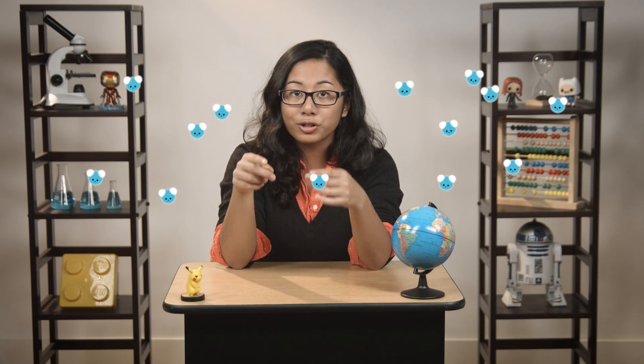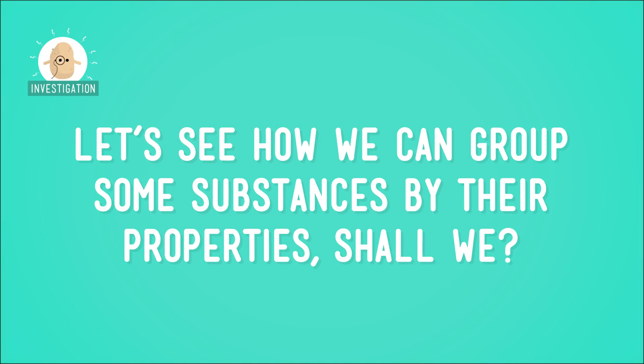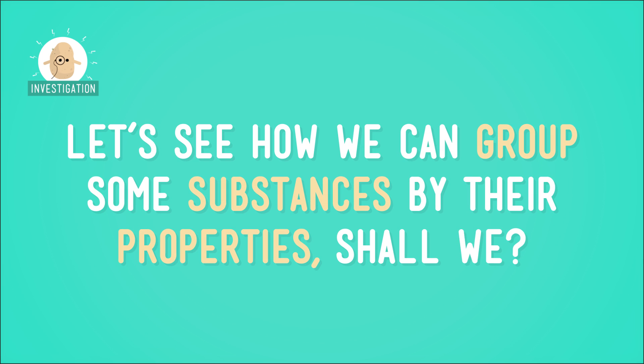But wait, there's more. If we look really closely at a water molecule, we'll see that it's made of two other substances. And if we had the right equipment, we could break the water molecule down into smaller parts — the atoms of those two substances — hydrogen and oxygen. These substances can't be broken down into any other substance, so we call them elements. Elements are the very most basic kind of substances, and they each have specific properties. So that's basically what stuff is made of. Now, let's see how we can group some substances by their properties, shall we?